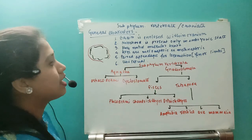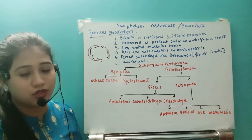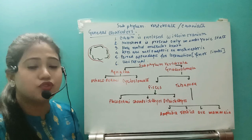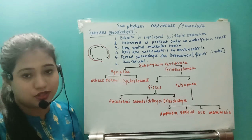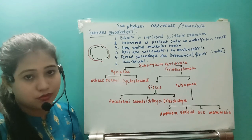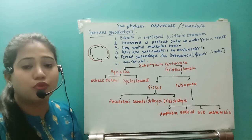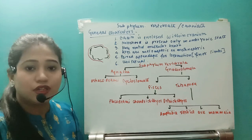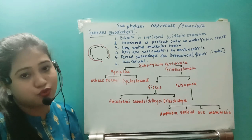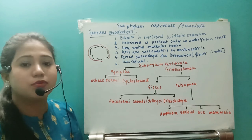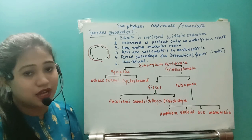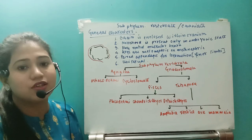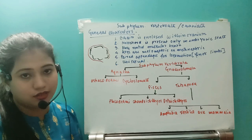The next characteristic is the ventral muscular heart. In vertebrates, the heart is present on the ventral side, whereas in non-chordates it is on the dorsal side. Fishes have a two-chambered heart, amphibia have a three-chambered heart, reptiles have an incompletely four-chambered heart, and birds and mammals have a four-chambered heart.